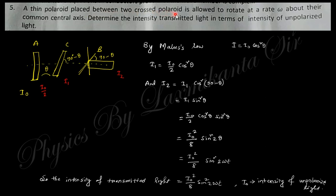A thin polaroid placed between two crossed polaroids is allowed to rotate with angular velocity omega about the common central axis. Determine the intensity of transmitted light in terms of the intensity of unpolarized light. If there is unpolarized light of intensity I₀, it becomes polarized with intensity I₀/2. From Malus's law, I₁ = (I₀/2)cos²θ. Again from I₁ to I₂, there is another angle change of 90 minus theta, so this is cos²(90-θ) = sin²θ. The final intensity will be I₀/8.